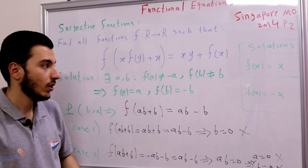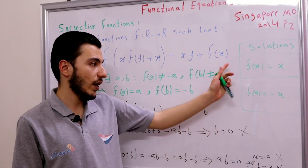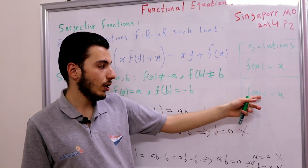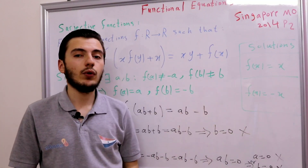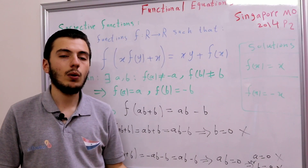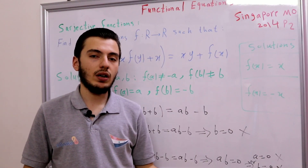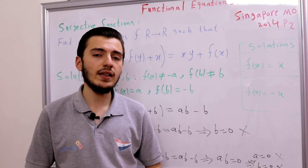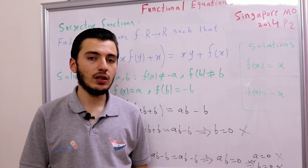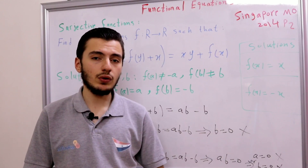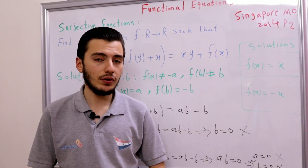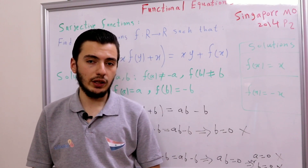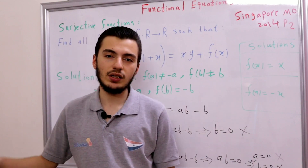So the only two solutions are f(x) = x for all real numbers, and f(x) = −x for all real numbers. Those are the only solutions to our problem. In this problem we discussed tricks for surjectivity and remembered the pointwise trap. In the next videos we'll be starting with a new concept: injectivity. If you liked the video, like, share, and subscribe to the channel. See you in the next video.